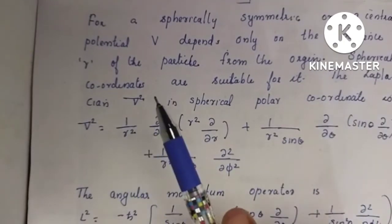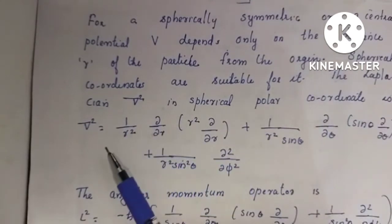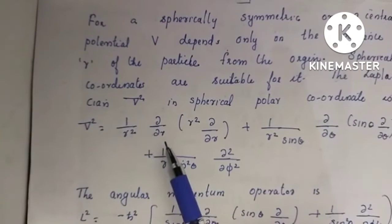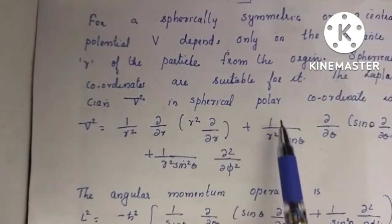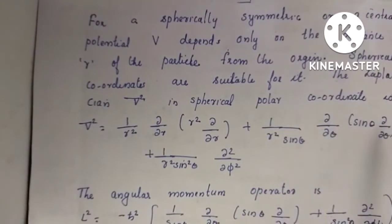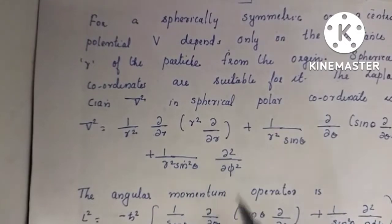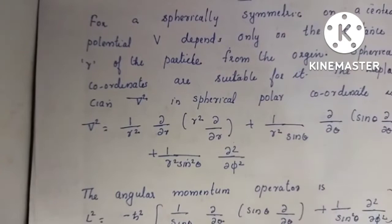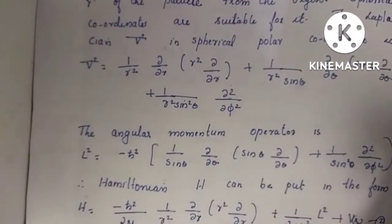The Laplacian del-squared in spherical polar coordinates is: del-squared equals 1 by r² times dou/dour times r² times dou/dour, plus 1 by r² sin θ times dou/douθ, plus 1 by r² sin²θ times dou² divided by douφ². Here we have the angular momentum operator.